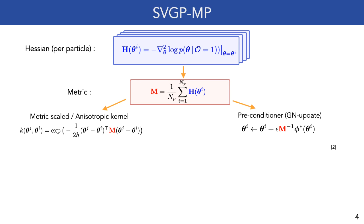This allows us to incorporate average curvature into the kernel to scale inter-particle distances, and also acts as a preconditioner to the SVGD gradient, resulting in a Gauss-Newton-like update.